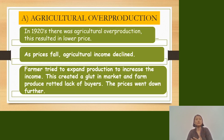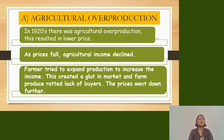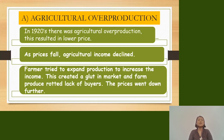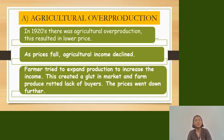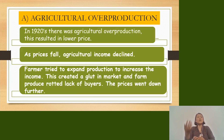Agricultural overproduction means the production of agricultural goods in a very large number — more than what is needed. In the 1920s, there was agricultural overproduction, which resulted in lower prices. As prices fell, agriculture income declined, and farmers tried to expand production further to increase their income, which created a glut in the market.